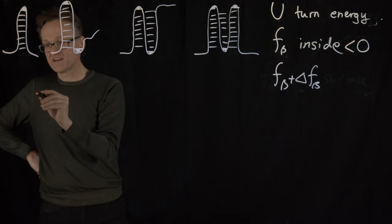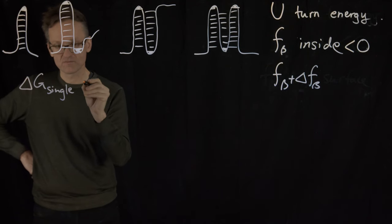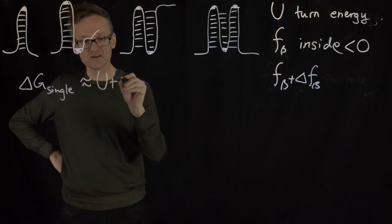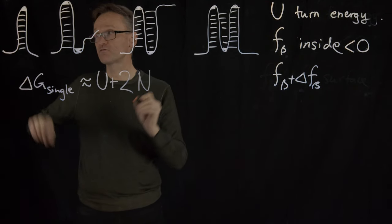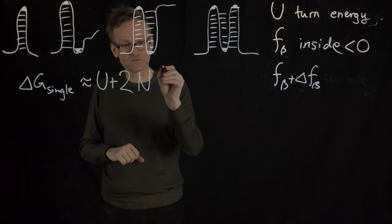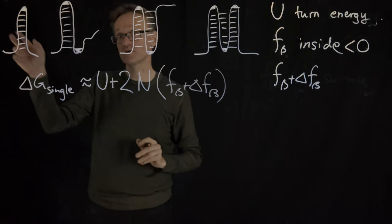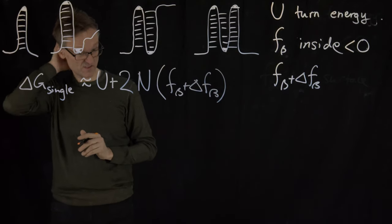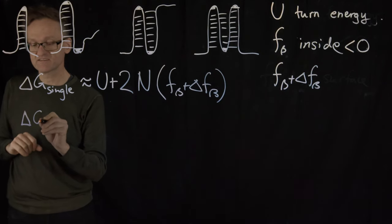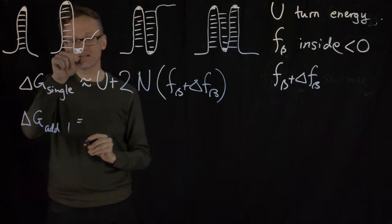So for a single strand I would have ΔG for hairpin that would be roughly U, that's the turn, plus the number of residues in each strand multiplied by f_β plus Δf_β because all of them are at the surface.